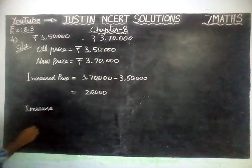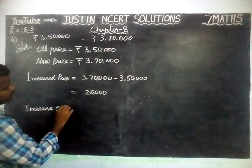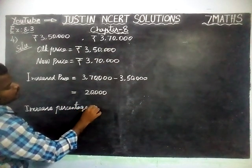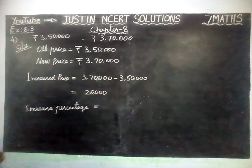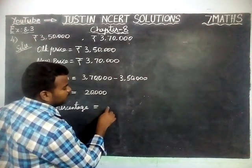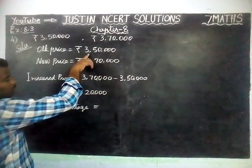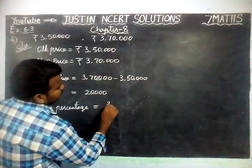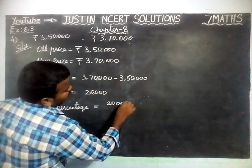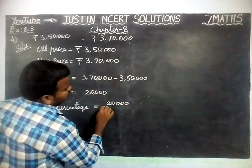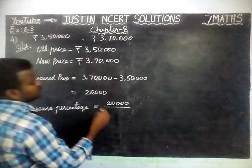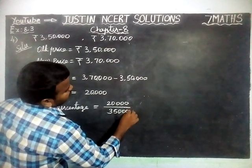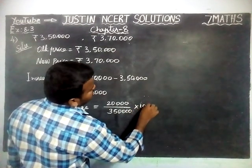Increased Percentage is equal to Increased amount divided by Old price, into 100%. So here: Increased price 20,000 divided by Old price 3,50,000, into 100%.